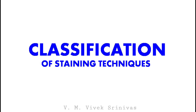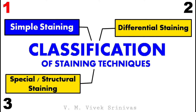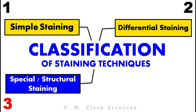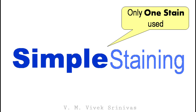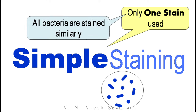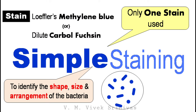Next, the classification of staining techniques. It is classified into three types: simple staining, differential staining, and special or structural staining. In simple staining, only one stain is used, so all bacteria are stained similarly — just to identify their shape, size, and arrangement. Stains like Loeffler's methylene blue or dilute carbolfuchsin staining solution are used.